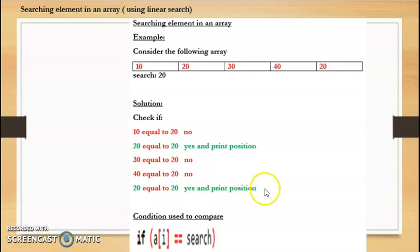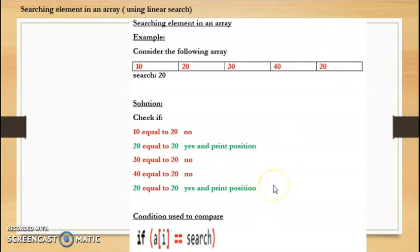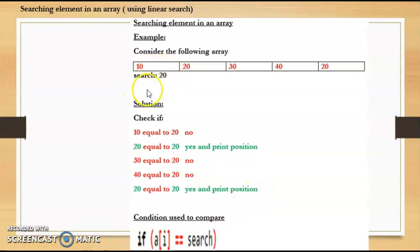Here also we need to be careful while printing the position. Inside the array the positions are 0th, 1st, 2nd, 3rd, and 4th, so this is actually the 4th position. But while printing we will print that 20 is present at the 5th position. So it will print 20 is present at position 2, and then 20 is present at position 5. This code handles the case when the search element is present more than once in the array.